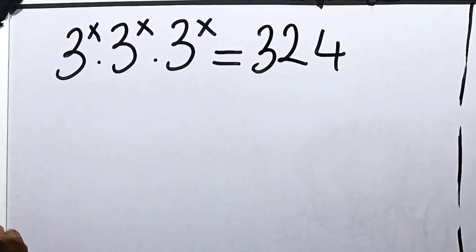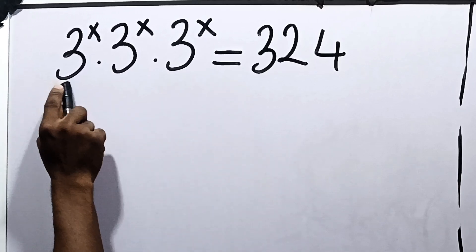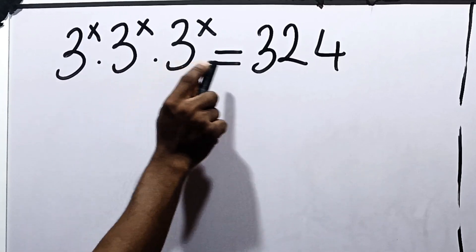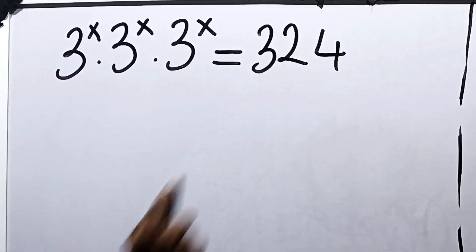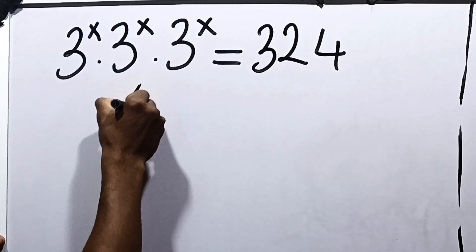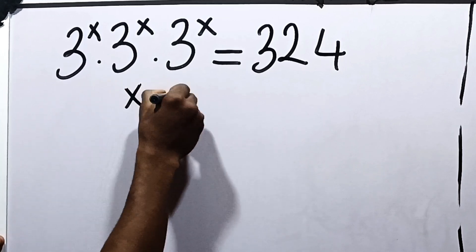Let's solve this together. It says 3 raised to the power x, dot 3 raised to the power x, dot 3 raised to the power x, is equal to 324. We are going to solve for the value or values of x in this equation.